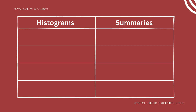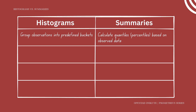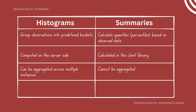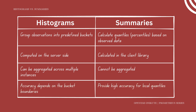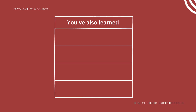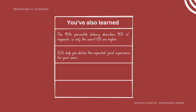Let's recap everything you've learned. Histograms group observations into predefined buckets and count how many fall into each range, while summaries calculate quantiles based on observed data. Histograms are computed on the server side, while summaries are calculated on the client library in your application. Histograms can be aggregated across multiple instances or services, and summaries cannot. The accuracy of a histogram depends on the bucket boundaries chosen, while summaries provide high accuracy for local quantiles. You've also learned about the power of distributions in alerting and how percentiles describe how most of your users experience your service. SLOs allow you to define the expected good experience for your users, and it's better to alert when user-facing SLOs are at risk, not just on CPU or memory alone.